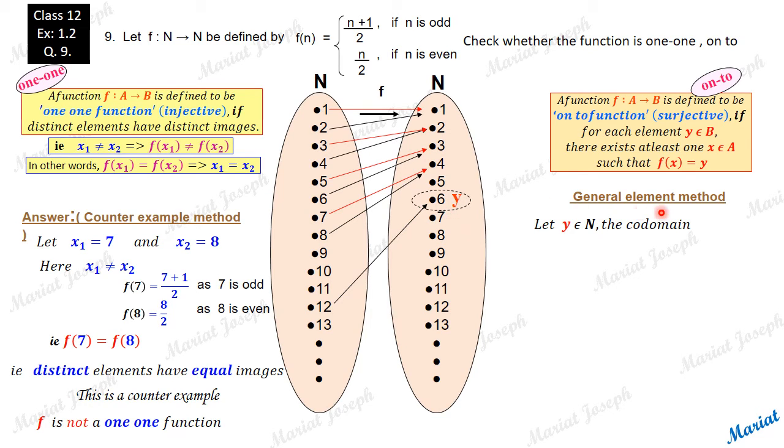Now let's go for an example, a general element example. Let y be an element belonging to the co-domain. Say y is 6. Now we need to get an x here whose image is 6. 6 could have been calculated as another integer by 2. So if n by 2 happens to be 6, n should have been 12. 12 by 2 is 6. So 6 is the image of 12. So we could get an x here.